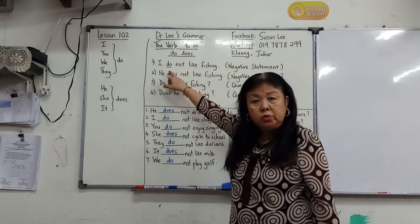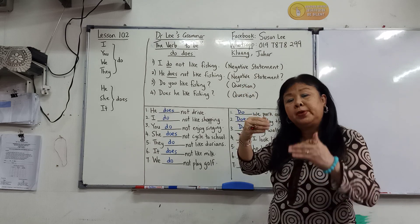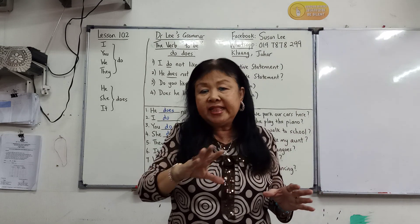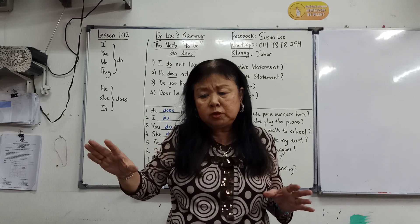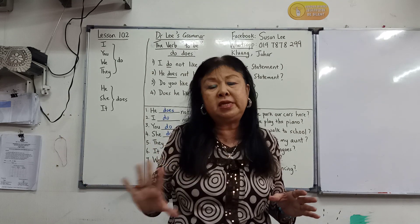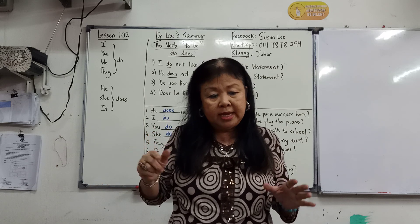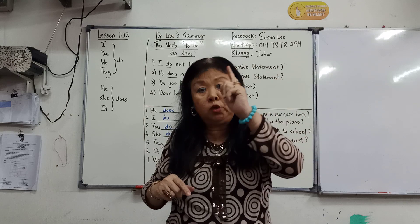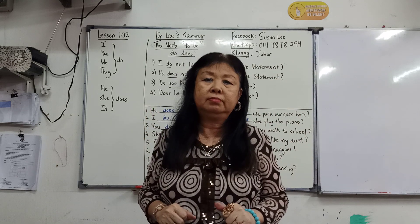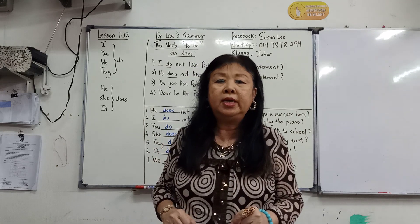Number two: the use of Do. Do is used when we make a negative sentence — meaning we deny something, we say 'not' or 'no.' So we use Do Not. I, You, We, They — Do Not. He, She, It — Does Not. That you must know and you should know.